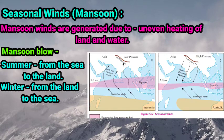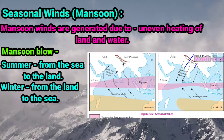From September to December, because of the low pressure area developing near the equator, the winds blow from the Indian subcontinent towards the equator. These are called the northeast monsoon winds. They are dry winds.